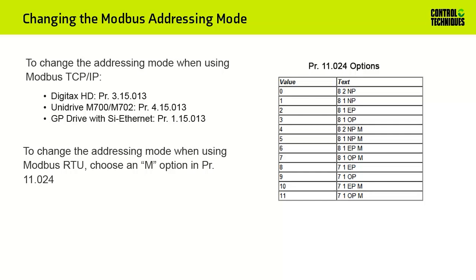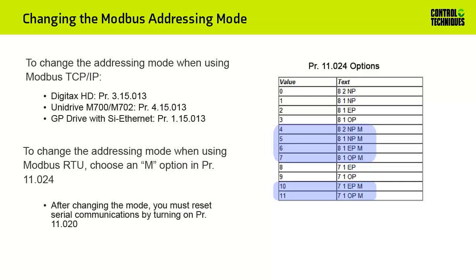The settings that include an M in them, such as values 4 through 7, 10, and 11, are what you would choose to change the mode from Standard to Modified addressing mode. The actual value you choose will depend upon the serial communication requirements for your PLC or HMI. After changing the mode, you must reset serial communications by turning on menu 11, parameter number 20. This parameter will turn off by itself once it's turned on.